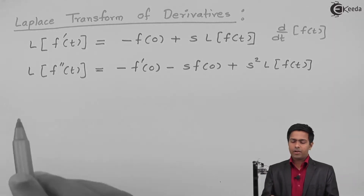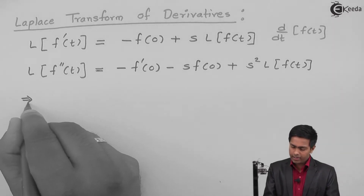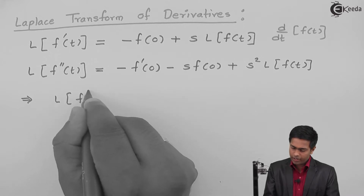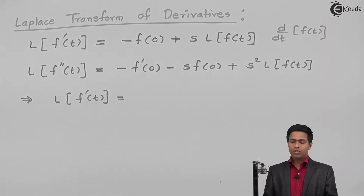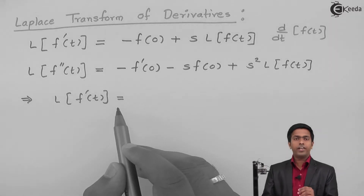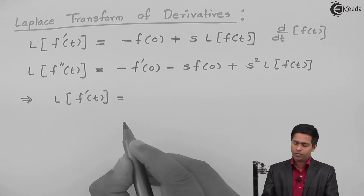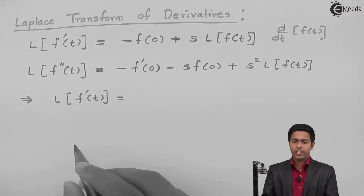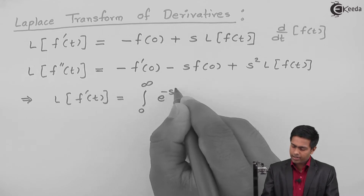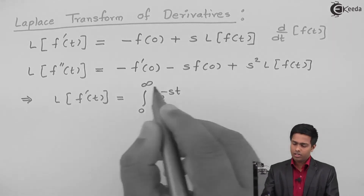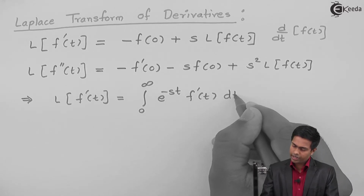I will start with the first property. We want to prove that Laplace of f'(t) equals the given result. Starting with the definition of Laplace transform: L{f'(t)} is the integral from 0 to infinity of e^(−st) times f'(t) dt.